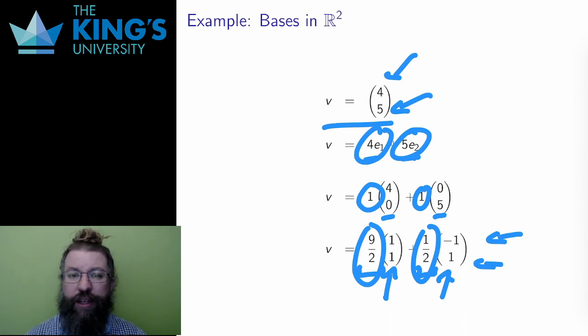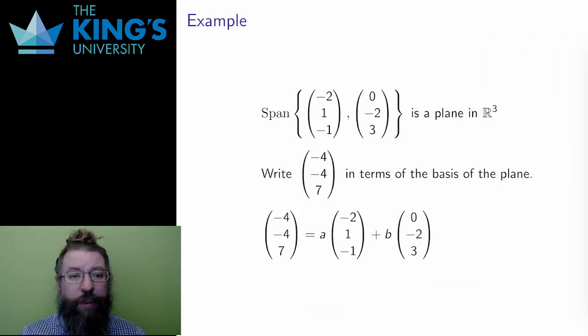Having hopefully reconceptualized the problem, let me move on to the general algorithm. And I'll work by examples to demonstrate this. The span of (-2, 1, -1) and (0, -2, 3) is a plane in R3. These two vectors are linearly independent, so they are a basis for the plane.